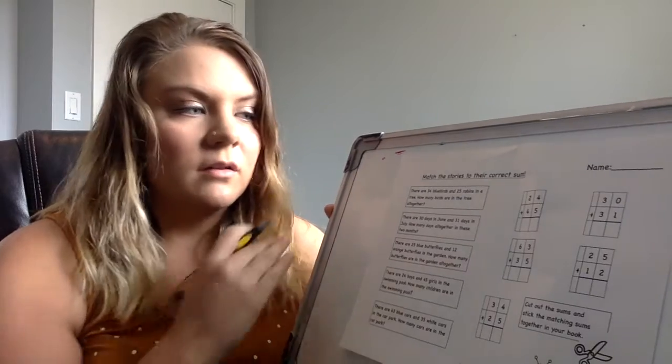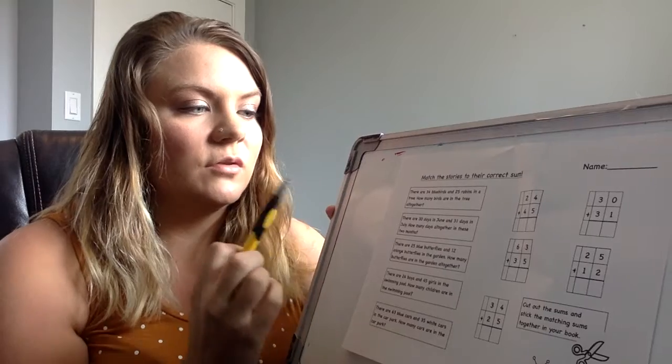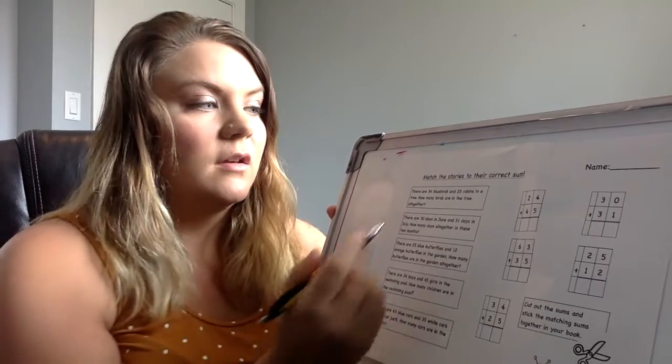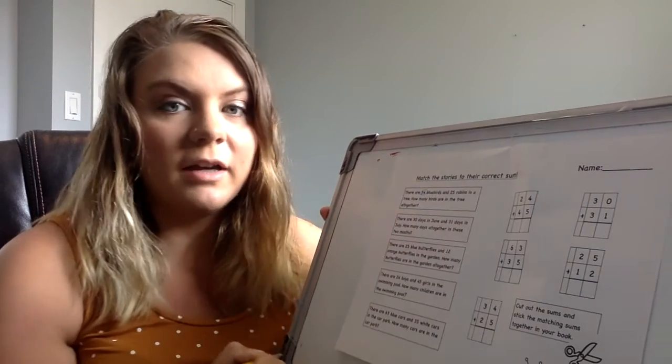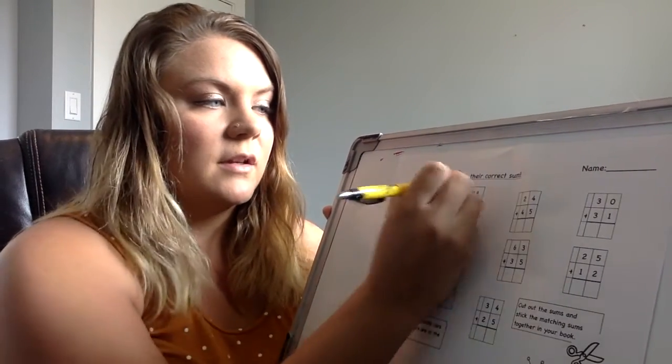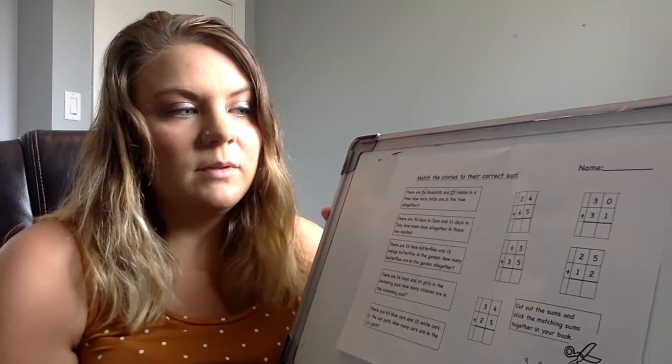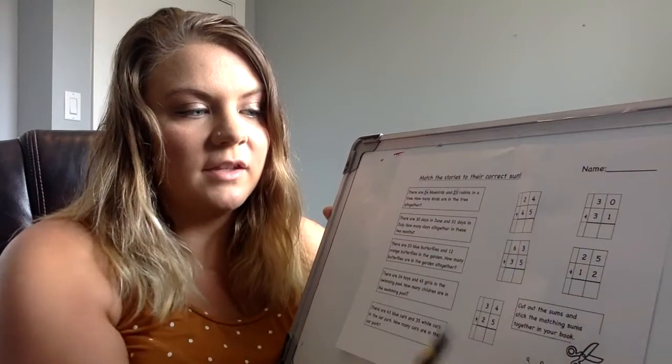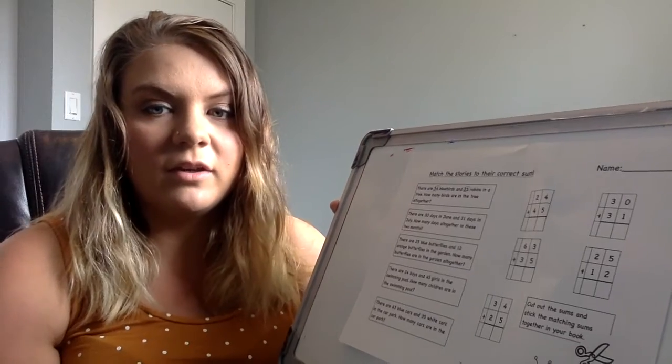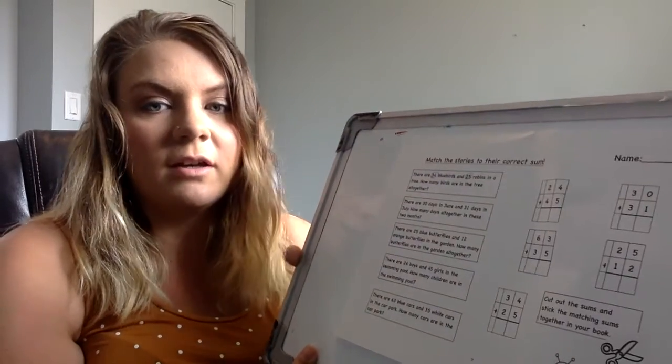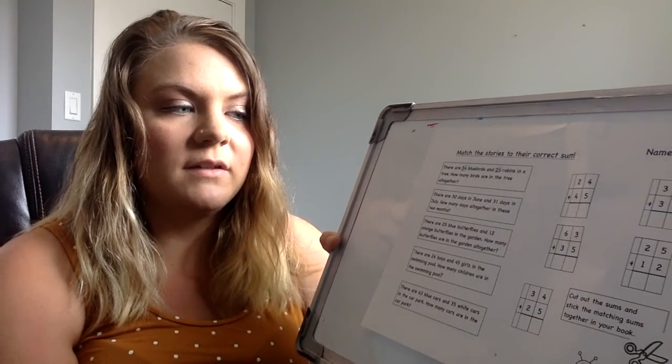So when you are doing this friends, all of these are addition questions so you don't have to worry about that right now. But you need to look at the numbers. So in this one there are 34, you can circle them or highlight them, 34 bluebirds and 25 robins in a tree. So now what we need to do friends is we need to look at the answers that they gave us here. What one has 34 and 25 in the equation? I want you to try and find that right now. Look at your page. What equation has 34 and 25 in it?